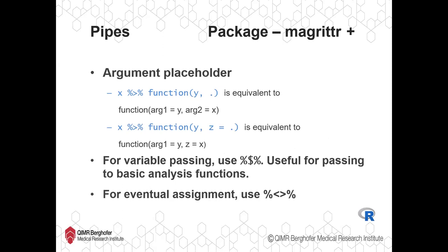If your object that you're piping across doesn't go to the first argument, you can use the full stop to show where that object is meant to go. So if the function requires a different value for its first argument, you provide that, and then specify where the piped object goes with the full stop. You can have full explicit control over where the object goes by specifying, for example, z equals full stop in the function brackets.